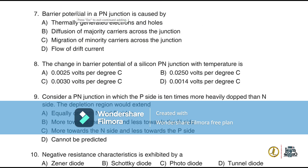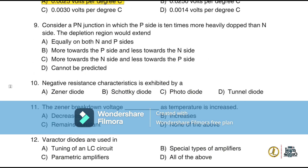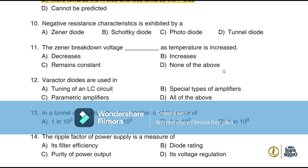Barrier potential in a p-n junction is caused by diffusion of majority carriers across the junction. The change in barrier potential of a silicon p-n junction with temperature is 0.0025 volts per degree centigrade. In a p-n junction where the p-side is ten times more heavily doped than the n-side, the depletion region extends more towards the n-side and less towards the p-side.